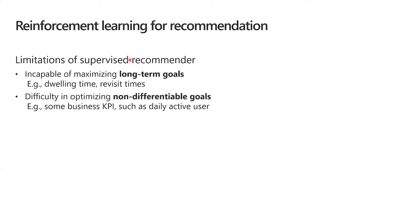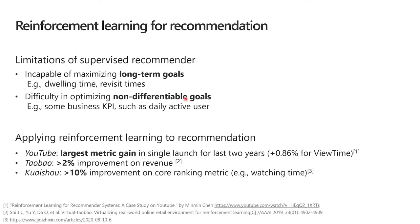Supervised recommenders are incapable of maximizing long-term goals, and it is also difficult to optimize non-differentiable objectives. Reinforcement learning is designed to optimize such goals, so applying RL to recommendation has obtained much attention. Reinforcement learning has also been tried in many company products, and policies trained using RL have obtained large improvements on these recommender systems.